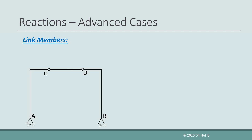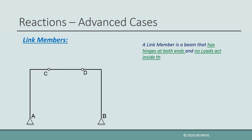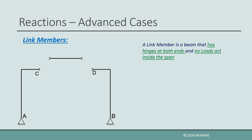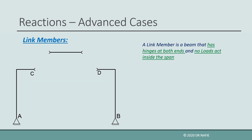In our introduction, we talked about link members. So what is a link member and how can it provide additional equilibrium equations? A link member is a beam that has two properties: it has a hinge at each of its ends, and it has no loads inside the span between the two ends. Let us try to figure this out by cutting the link member CD at points C and D, as shown.